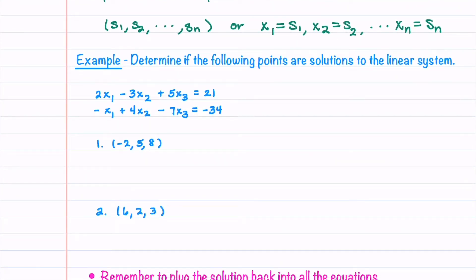To determine if a list of numbers is a solution to a linear system, we substitute those numbers back in and check that the left side matches the right side. In this example, we're given a linear system with two equations and three unknowns and asked to determine if two points are solutions. For our first point, we substitute negative 2 into x1, 5 into x2, and 8 into x3.